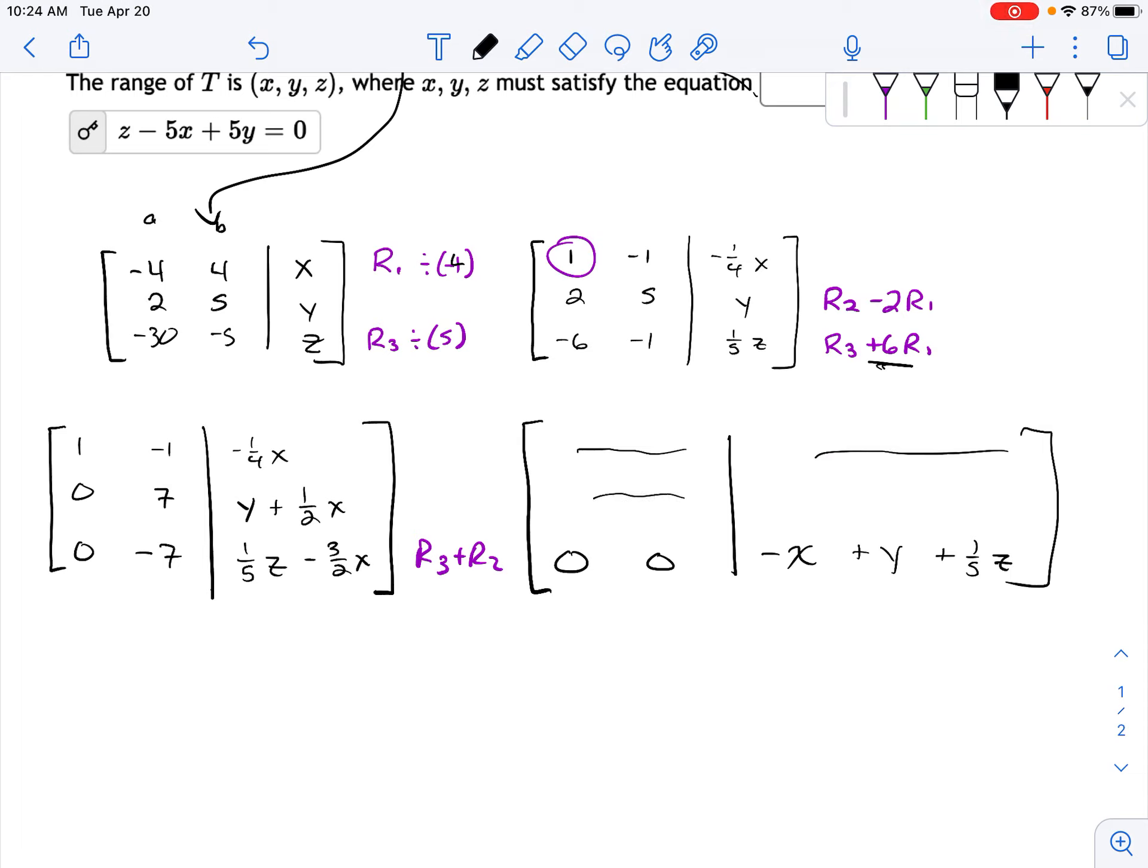And then the other stuff up here, which I'm not even going to recopy. This is the equation that we want. This equation, if you rewrite it, says zero equals minus x plus y plus one-fifth z. And that's the answer.